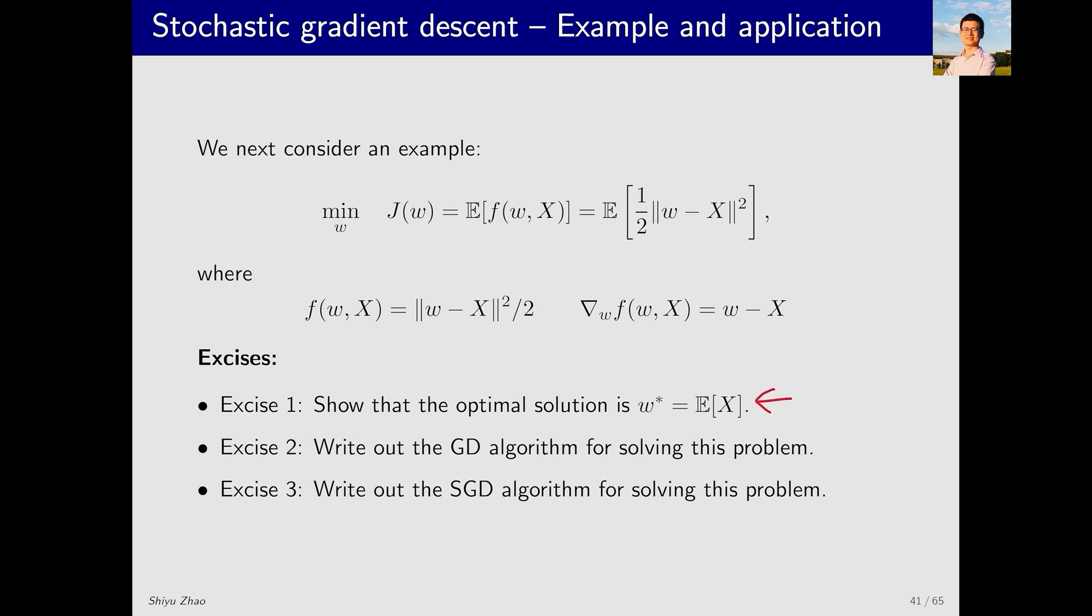The first exercise is whether we can prove that the optimal solution w* for this problem is the expectation of x. The second is to write out the gradient descent algorithm for solving this optimization problem. The third is to write out the stochastic gradient descent algorithm for solving this problem. We will provide the solutions to the last two exercises later.